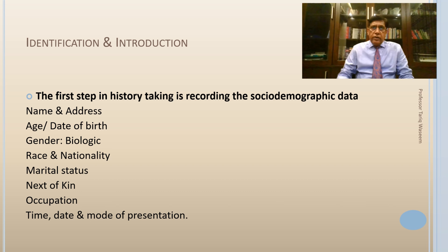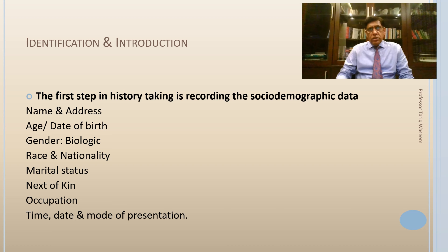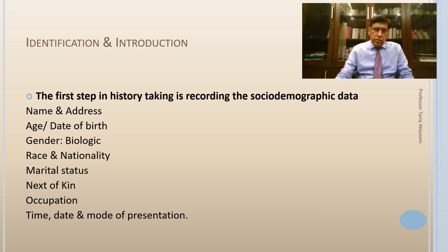There has to be some socio-demographic data: note your patient's name, where they come from, their age, and biological gender. Race and nationality have a bearing on certain diseases. Marital status and next of kin matter for legal requirements. The patient's occupation may have a bearing on their disease, and similarly note when this history was taken and when the patient presented to the emergency, OPD, or ward.